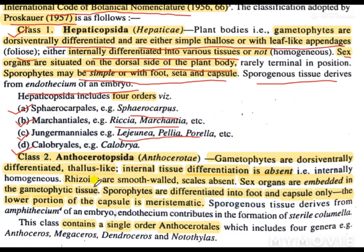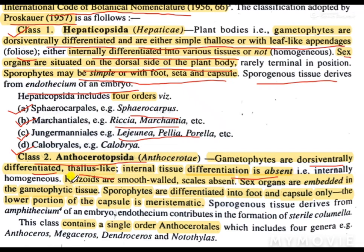Now let's move on to class number two: Anthocerotopsida. The gametophytes are dorsi-ventrally differentiated, having a dorsal as well as a ventral surface. Their body is thallus-like, meaning the body is not differentiated into roots, stem and leaves. Internal tissue differentiation is absent, meaning internally the plant body is homogeneous — all cells are of the same kind. The rhizoids are smooth-walled, and the scales are absent.